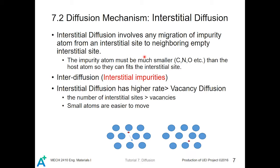Interstitial diffusion involves the migration of impurity atoms from an interstitial site to neighboring empty interstitial sites. Interstitial sites are the spaces between perfectly packed atoms — even for perfectly packed atoms, there is still some space between them. This allows the migration of much smaller impurity atoms into those spaces. The impurity atoms must therefore be much smaller than the host atoms — for example, carbon, nitrogen, or oxygen — so that they can fit into the interstitial sites.